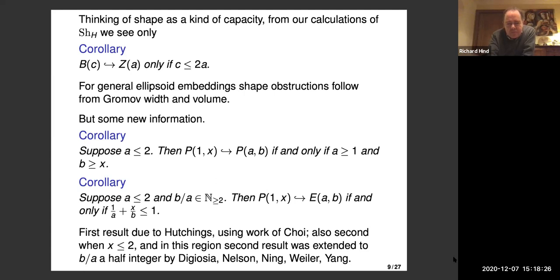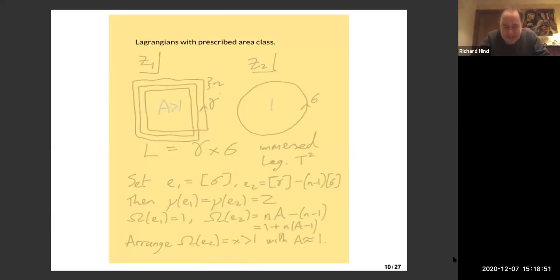I want to show more or less how the proof goes in the case when x is bigger than two and you're embedding in an ellipsoid with capacity less than two. This is a sketch showing why all rigidity is lost once the capacities get beyond two. What's drawn here is an immersed Lagrangian T² in C², with prescribed area class.